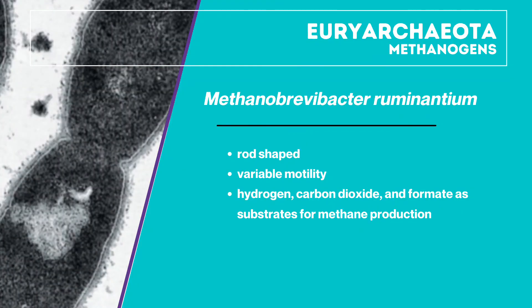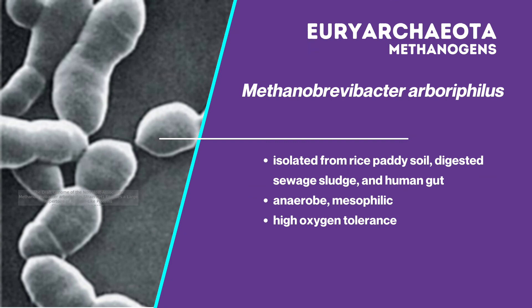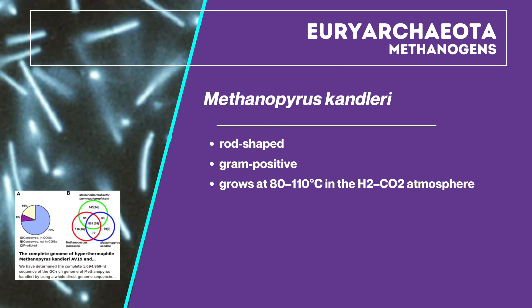Methanobrevibacter ruminantium is rod-shaped with variable motility and is able to use hydrogen and carbon dioxide as substrates for methane production. Methanobrevibacter oryzae is isolated from rice paddy soil, digested sewage sludge, and recently from the human gut. They are anaerobic and mesophilic, and have an unusually high oxygen tolerance, which was unexpected since methanogens were predicted to be particularly oxygen-sensitive due to the lack of cytochrome oxidase and catalase. Methanopyrus kandleri is a rod-shaped, gram-positive methanogen that grows at 80 to 110 degrees Celsius in an H2/CO2 atmosphere.